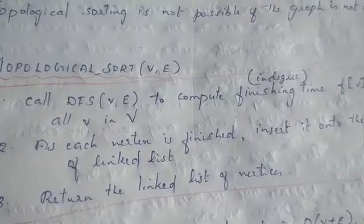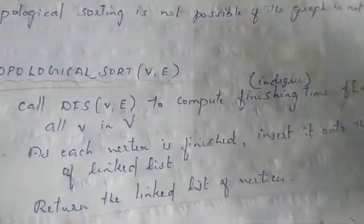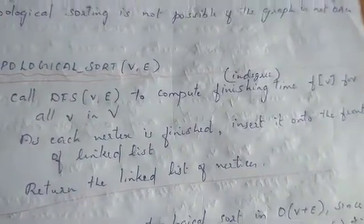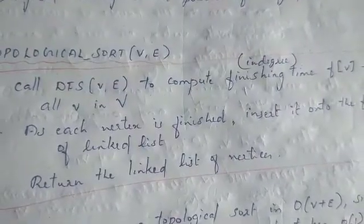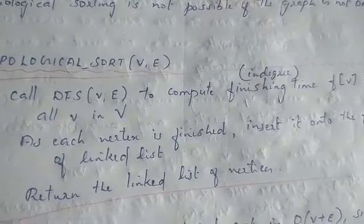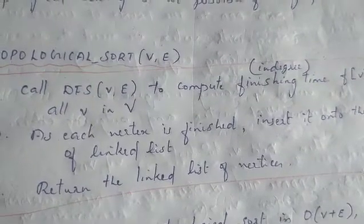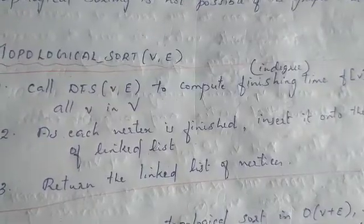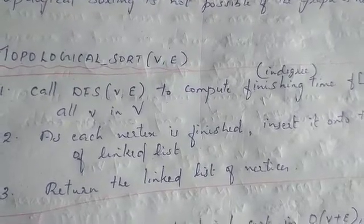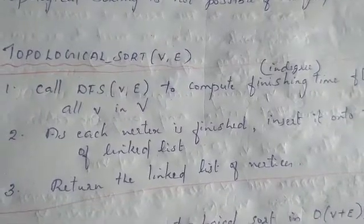We indicate the other vertices in V. As each vertex is finished, we insert it into the front of the linked list. We remove the vertex with in-degree zero, add it to the linked list, and continue until all vertices are removed. Then we return the linked list in sorted order of vertices.